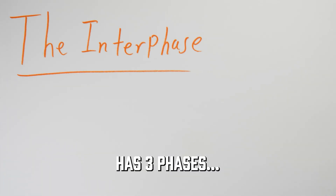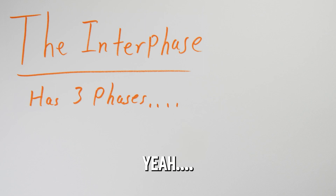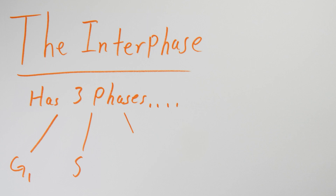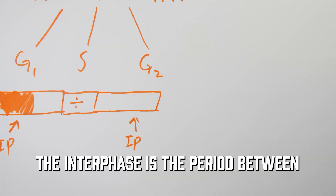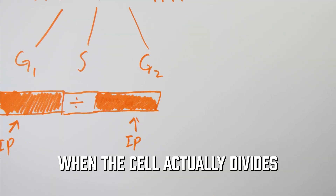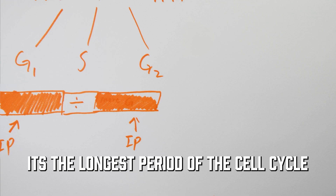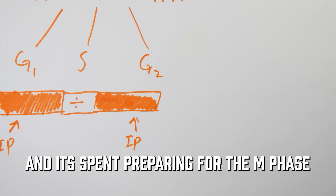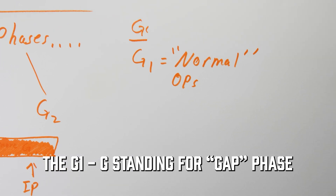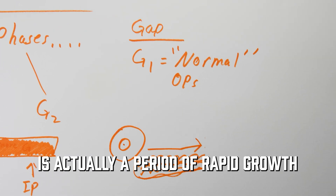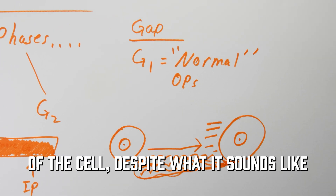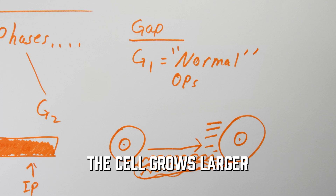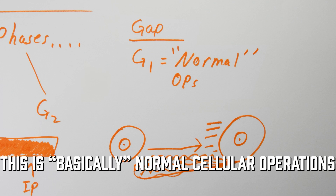The interphase has 3 phases — it's divided into G1, S, and G2. The interphase is the period between when the cell actually divides; it's the longest period of the cell cycle, and it's spent preparing for the M phase. The G1, G standing for gap phase, is actually a period of rapid growth of the cell despite what it sounds like. The cell grows larger and produces organelles and proteins — this is basically normal cellular operations.